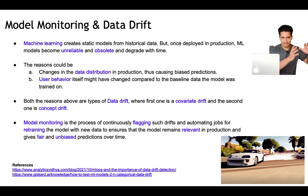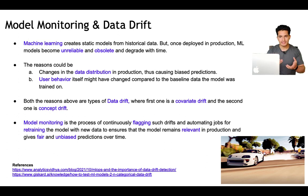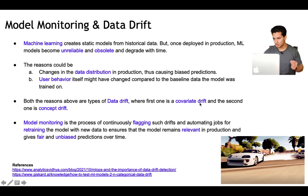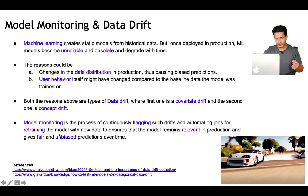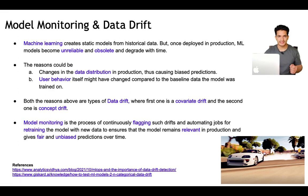Two things: either the independent variables or features may drift, or the target itself may drift — like the user behavior itself may drift. Both reasons are types of data drift. The first one is covariate drift and the second one is concept drift. Model monitoring is the process of continuously flagging such drifts and automating jobs for retraining the model with new data to ensure the model remains relevant in production and gives fair and unbiased predictions over time.